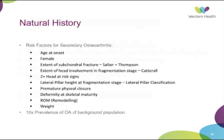The natural history: the biggest thing parents want to know is the child's risk of ongoing problems and secondary osteoarthritis. The key factor is age at onset — children less than six generally do well, children over six generally do very poorly. Other prognosticators include female sex, extent of involvement at the fragmentation stage, loss of lateral pillar, two or more head-at-risk signs, premature physeal closure, deformity at skeletal maturity, and reduced range of motion.